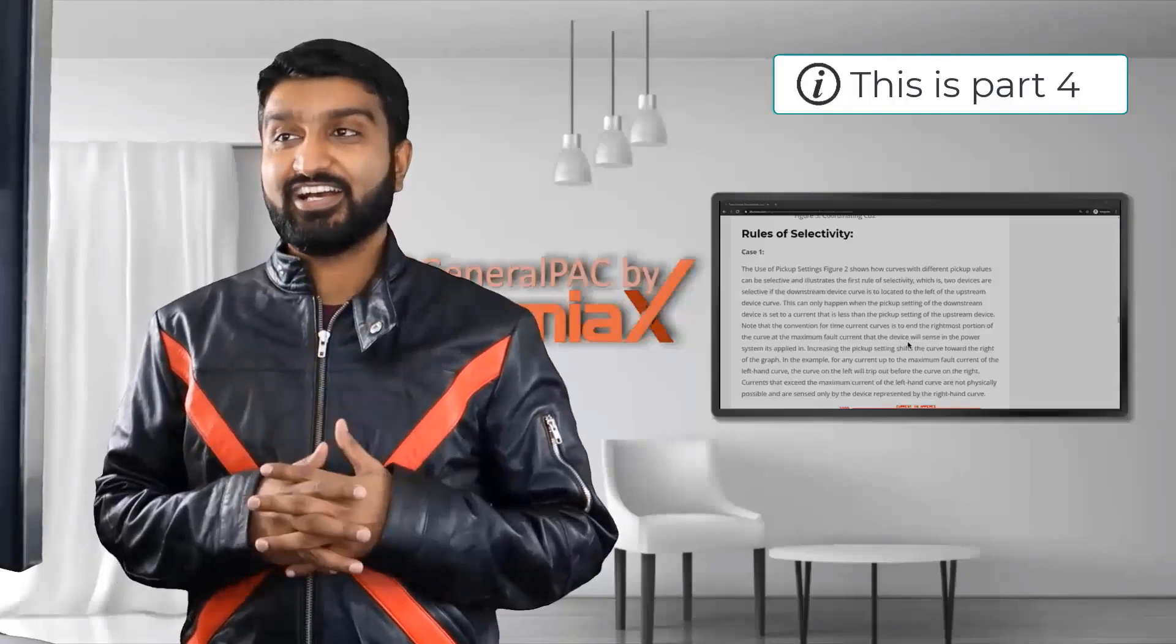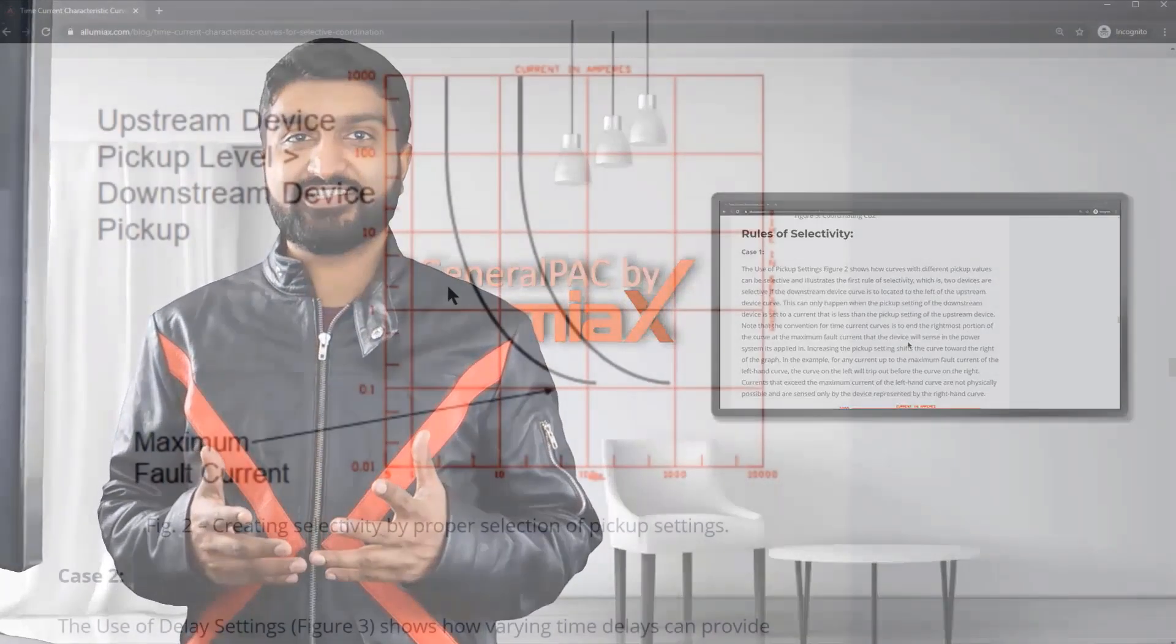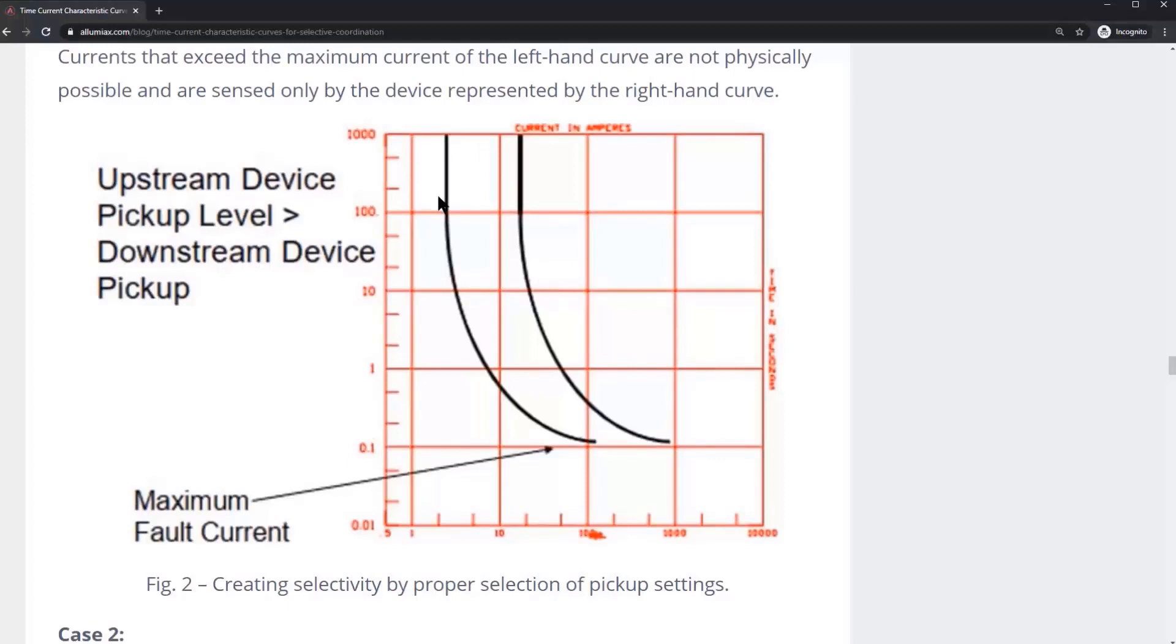In this part we're going to go over the rules of selectivity. This right here would be considered as the pickup setting. This is for breaker number one or relay number one. And this point right here is the pickup setting for relay number two.